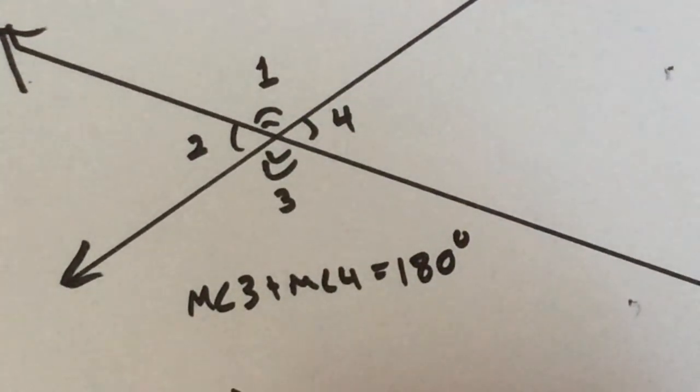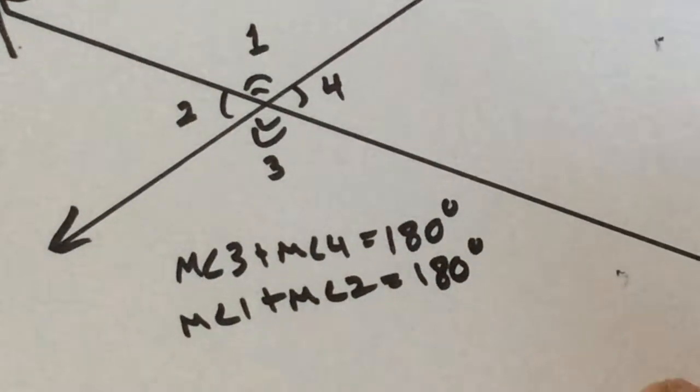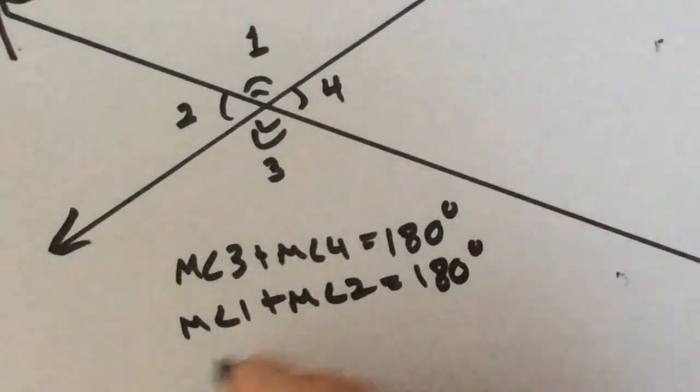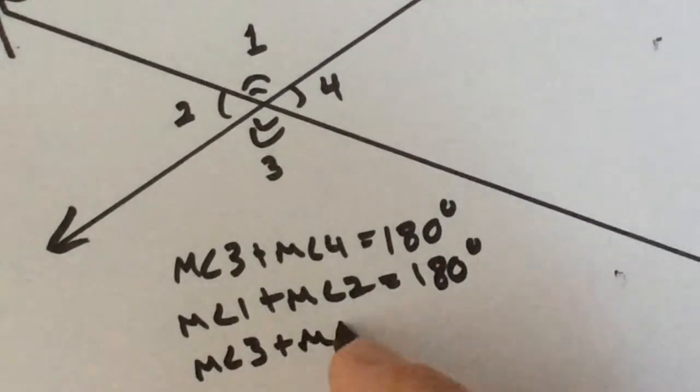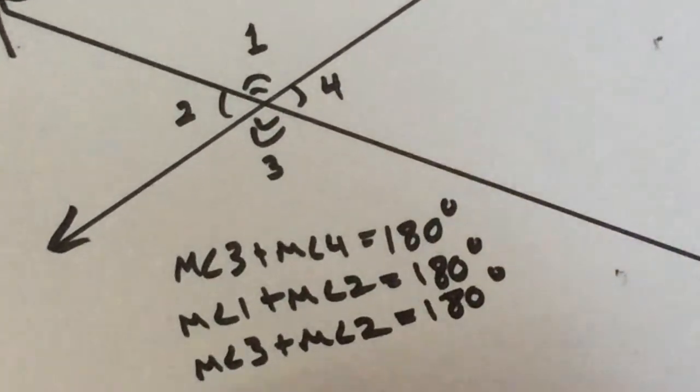What others? One and two. Okay. Somebody else. Give me another pair. Three and two. I think there's one more there, right? One and four. Okay.